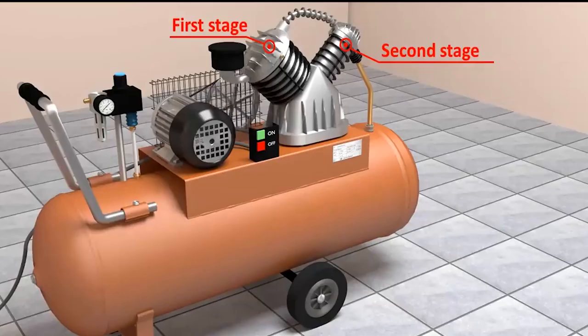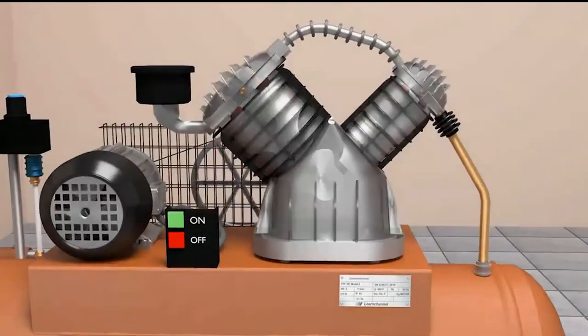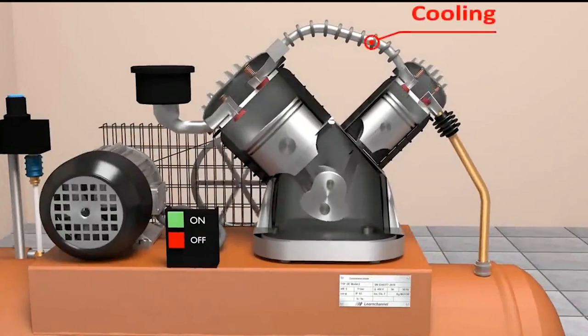For example, two-stage compressors are bulky and may not be as portable as you would think. They require high power to operate and hence need to be installed at a permanent storage facility.